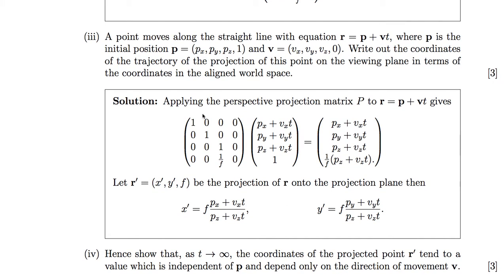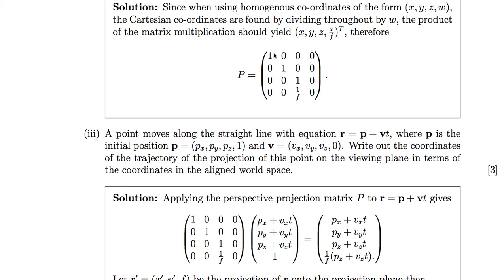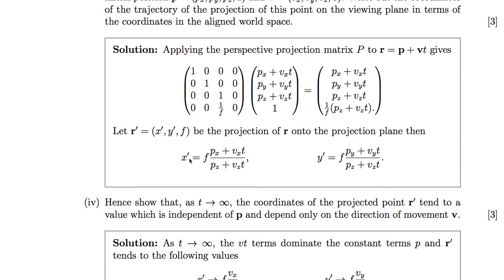The next part: a point moves along a straight line. We have the straight line equation where p is the initial point and b is a direction vector. Applying our result from the previous part to each component along the line — x, y, and z — and doing that multiplication gives us the homogeneous coordinates. Dividing by the fourth element gives us the coordinates for our point on the projected line.